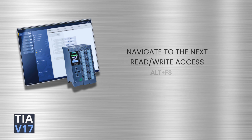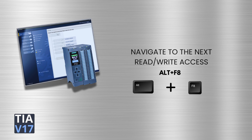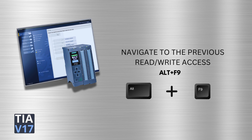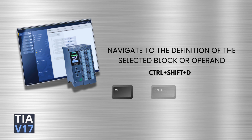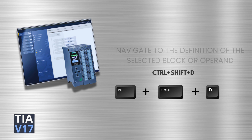To navigate to the next read-write access, the shortcut key is Alt plus F8. To navigate to the previous read-write access, the shortcut key is Alt plus F9. To navigate to the definition of the selected block or operand, the shortcut key is Ctrl plus Shift plus D.